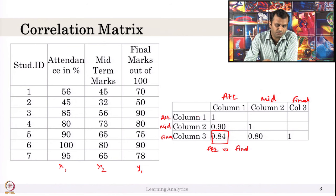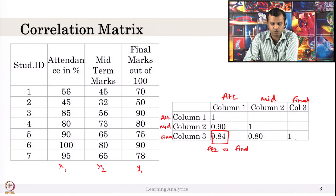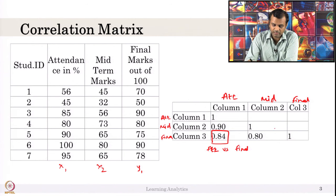The diagonal of the matrix represents self-correlation — attendance versus attendance, midterm marks versus midterm marks, final marks versus final marks — so obviously it is 1 for self-correlation. Ignore the diagonal part of this matrix.